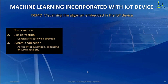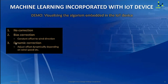I'm going to show the demo. The demo shows three defined modes. One is no correction. Number two is bias correction, where I correct a constant offset to the wind direction. Number three is dynamic correction, which adjusts the wind vane signal in real time depending on air temperature, wind speed, and nacelle direction.